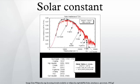The angular diameter of the Earth as seen from the Sun is approximately 1/11700 radians, meaning the solid angle of the Earth as seen from the Sun is approximately 1/175 million of a steradian. Thus the Sun emits about 2.2 billion times the amount of radiation that is caught by Earth, in other words about 3.86×10^26 watts.